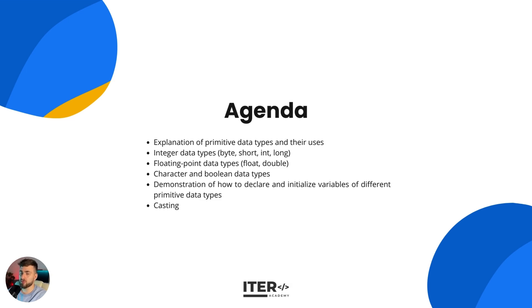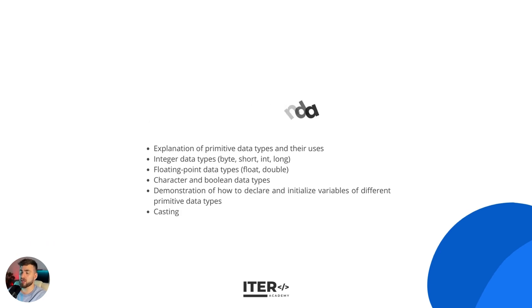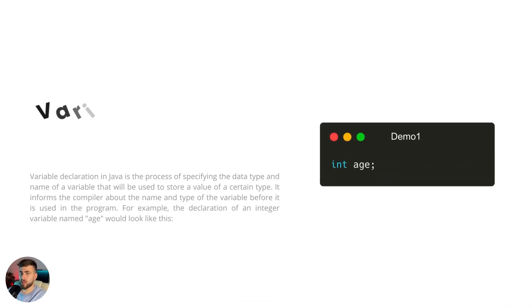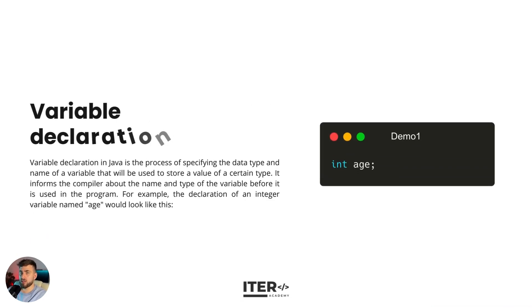During this lesson we'll discuss the following topics: the explanation of primitive data types and their uses, integer data types like byte, short, int, long, floating point data types like float and double, character and boolean data types, demonstration of how to declare and initialize variables, and also casting.